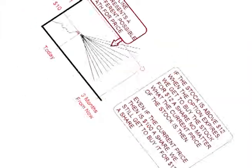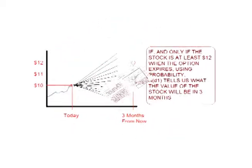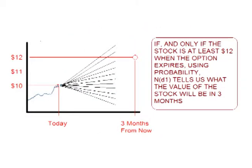This brings us to the second unknown. The second unknown we have to answer is: if, and only if, the option is exercised, what will the future value or price of the stock be? We get to buy it for $12, even if the stock is worth more than $12. ND1 tells us the probability or odds of what the value of the stock will be. It is an expected value formula based on probability that is contingent on the option being exercised.